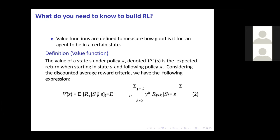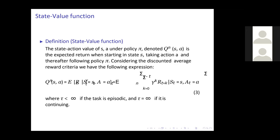We want to maximize this expected reward function in a given state. We also have the state-action value function, which says the same thing but given both state S and action A — the expected value of return while taking action A in state S. That's the only difference: the state value function and the state-action value function Q, which gives expected return given state S and action A.